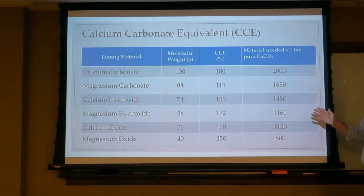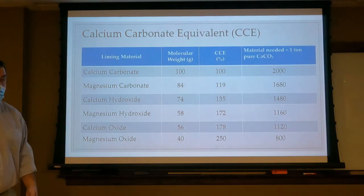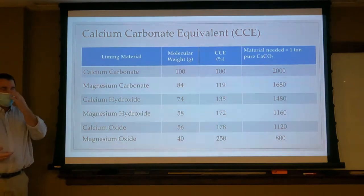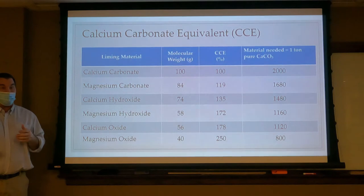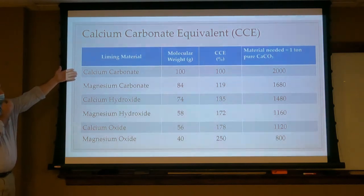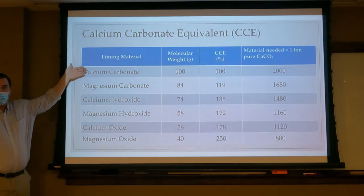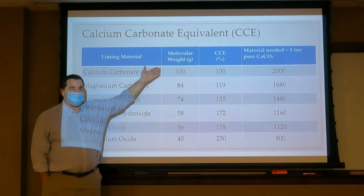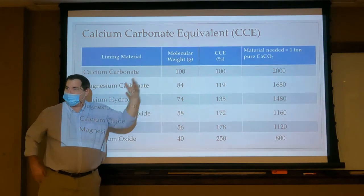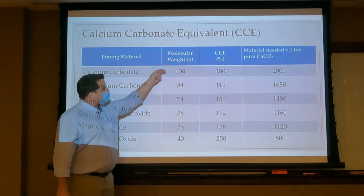There are different liming materials, and you might want to ask your supplier what type they have, because some materials are better than others. They may already know what their calcium carbonate equivalent or fineness factor is — they might just say it's 95% or 85% effective. When we calculate calcium carbonate equivalent, we do so based on molecular weight, using calcium carbonate as the baseline. Conveniently, the molecular weight of calcium carbonate is 100, making it a very good baseline — so calcium carbonate itself would be 100% CCE.